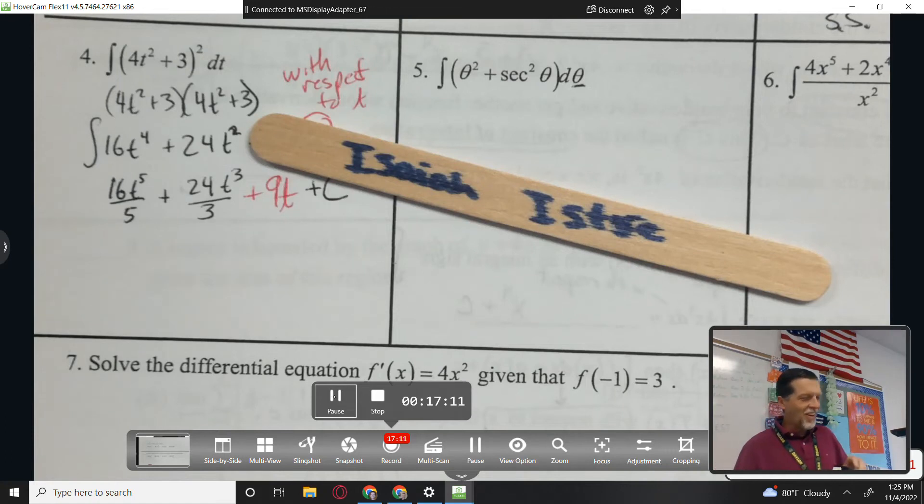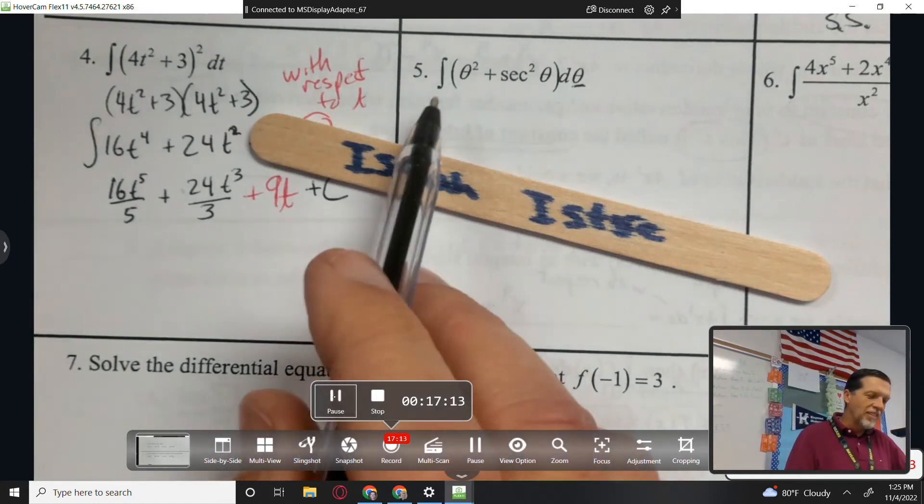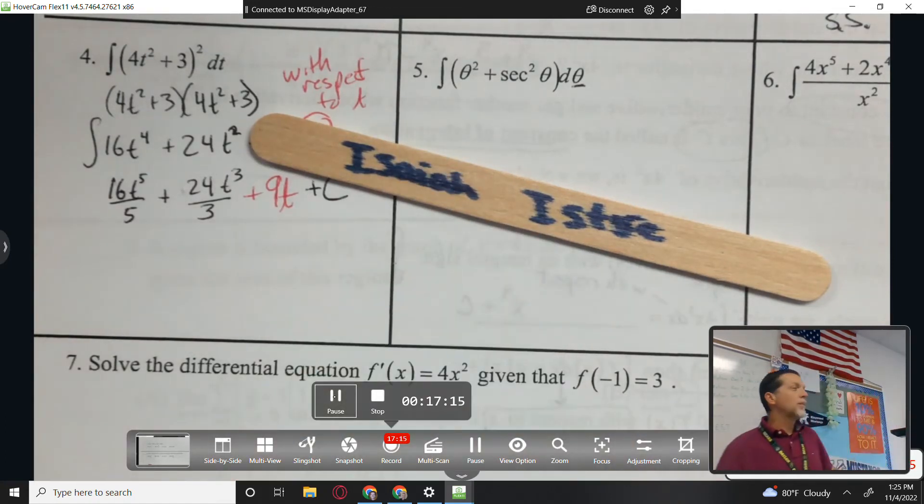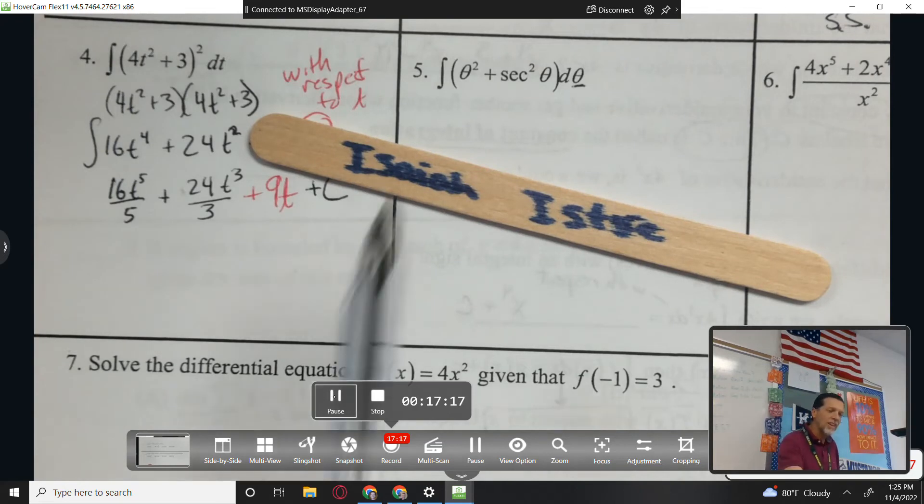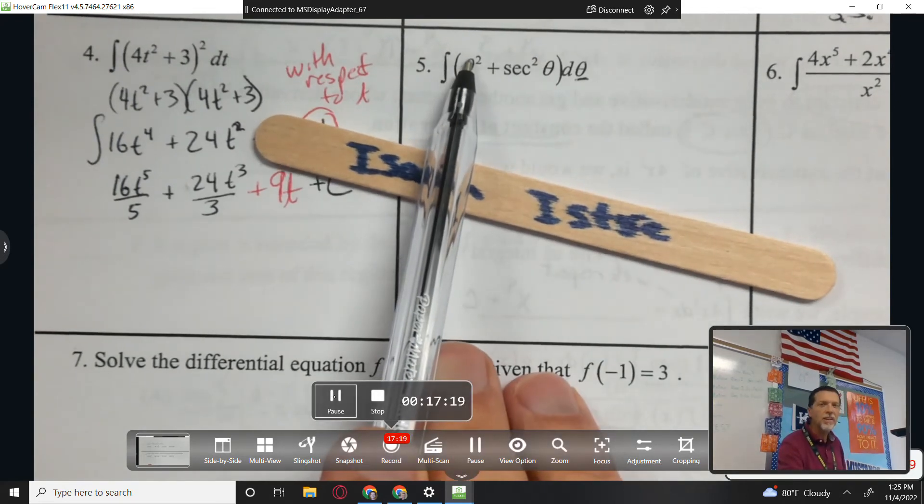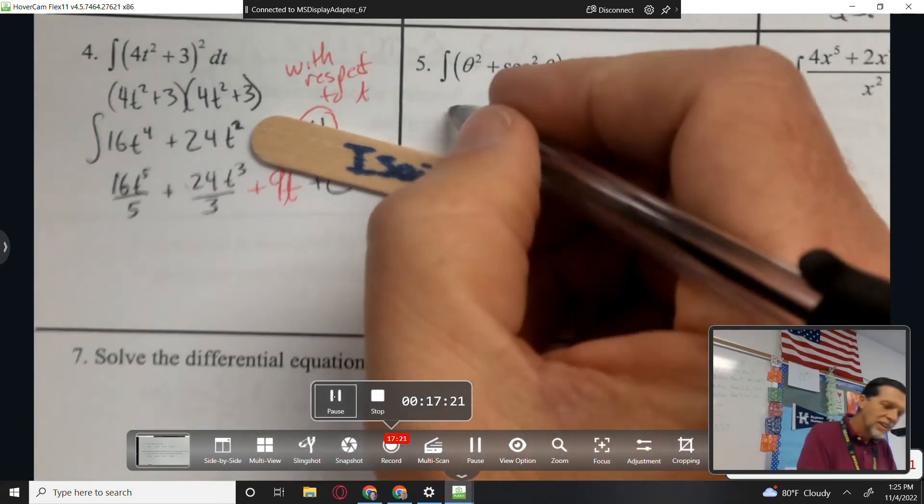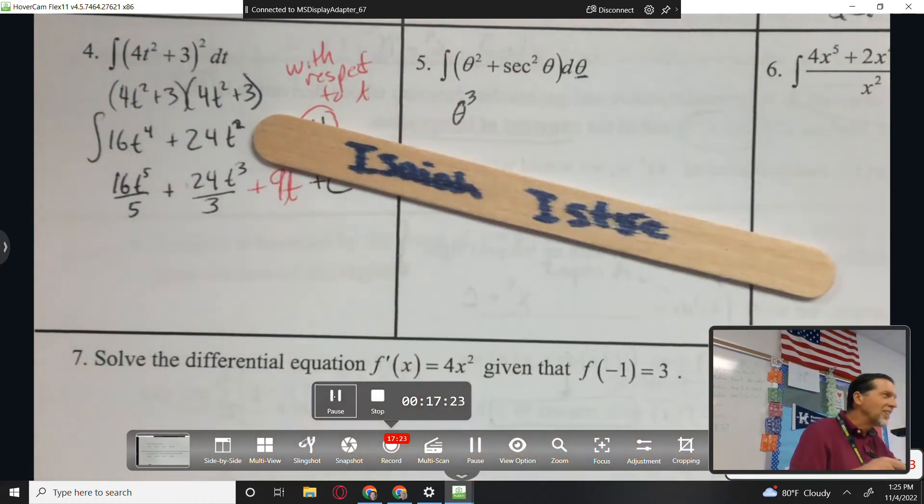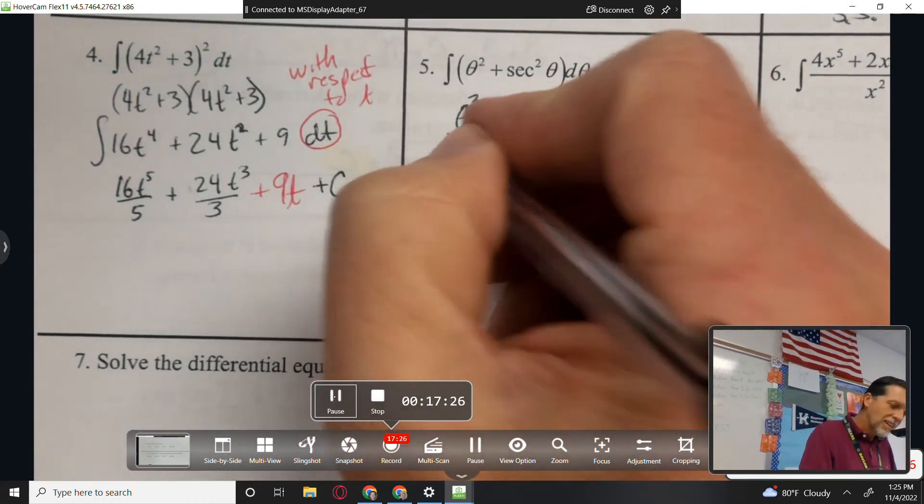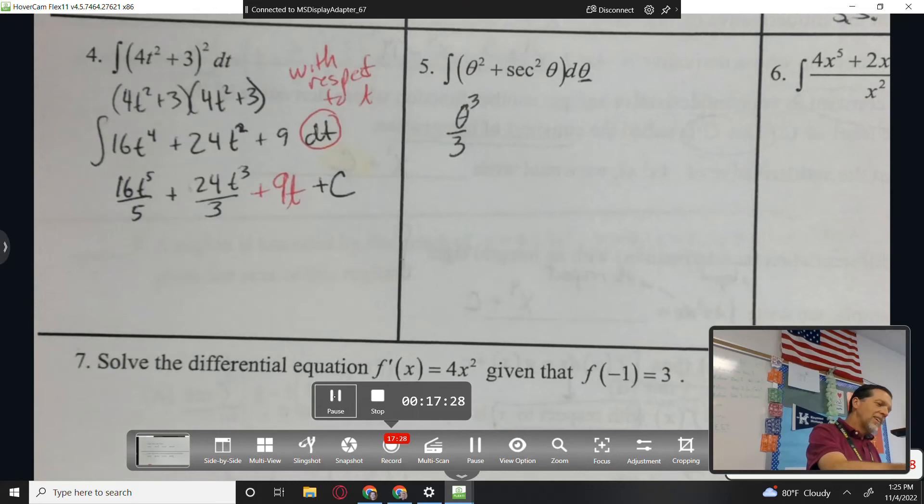So Isaiah, what's the antiderivative of a variable squared? Forget the theta, just what's the antiderivative of something squared? Cubed. And what else? Divided by 3. There we go. We don't need Landon here. Hope he watches this video and hears me say that.